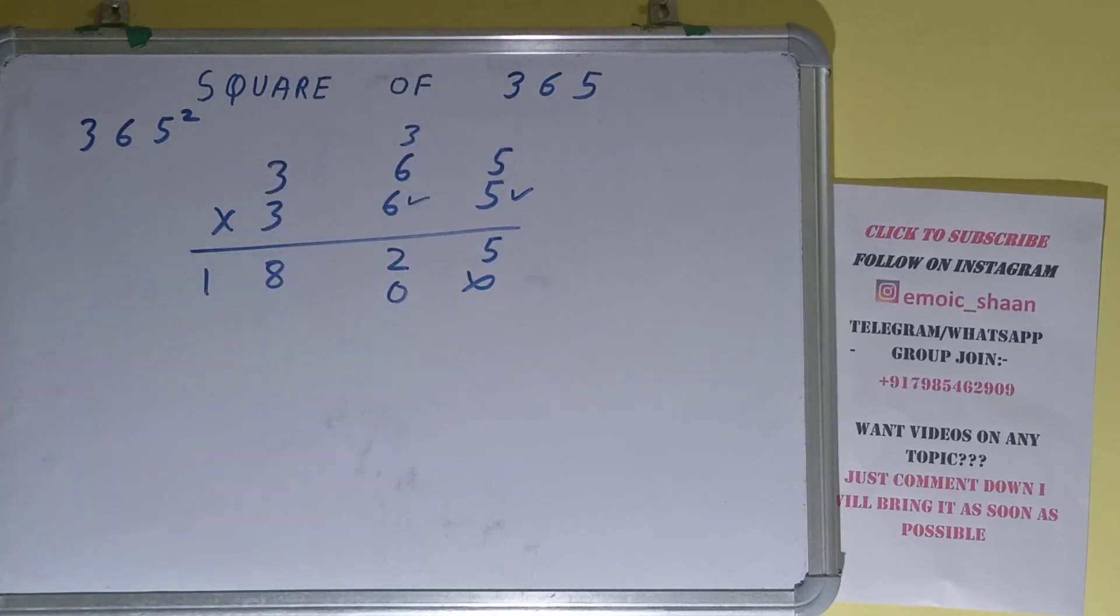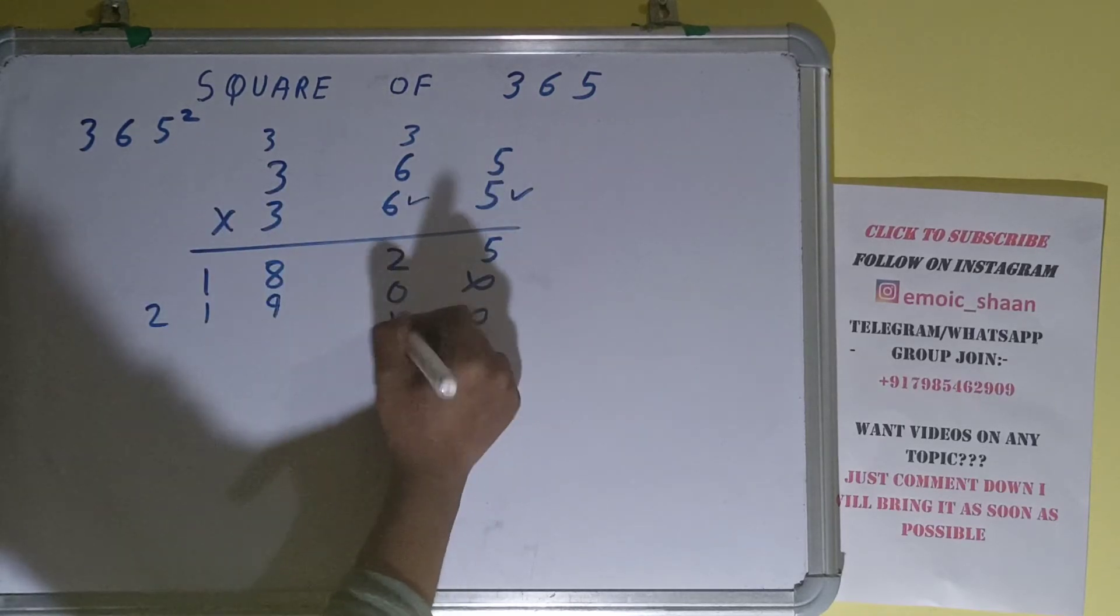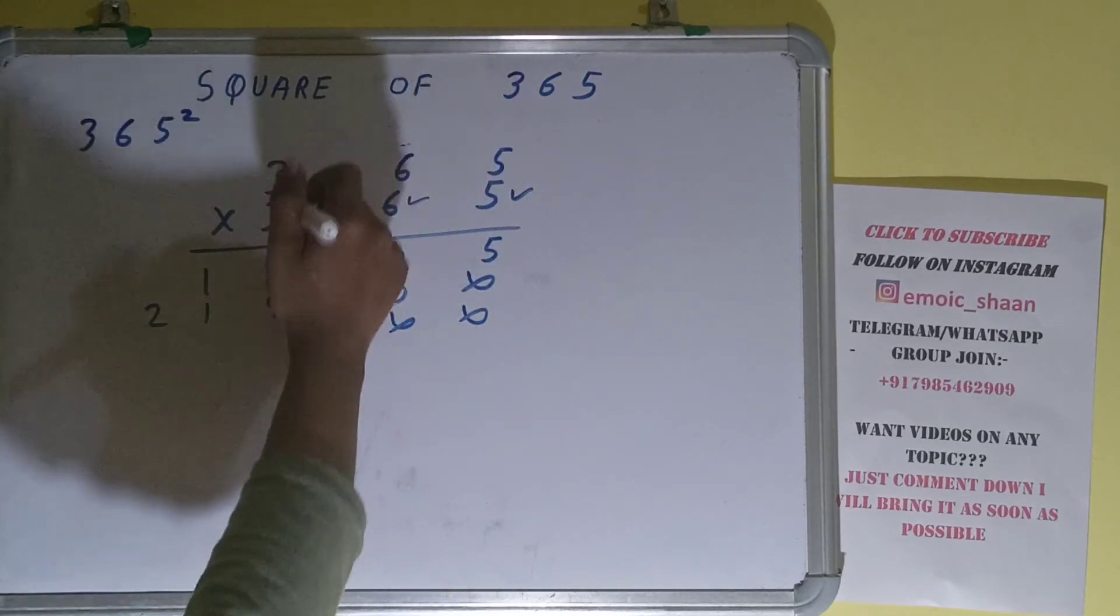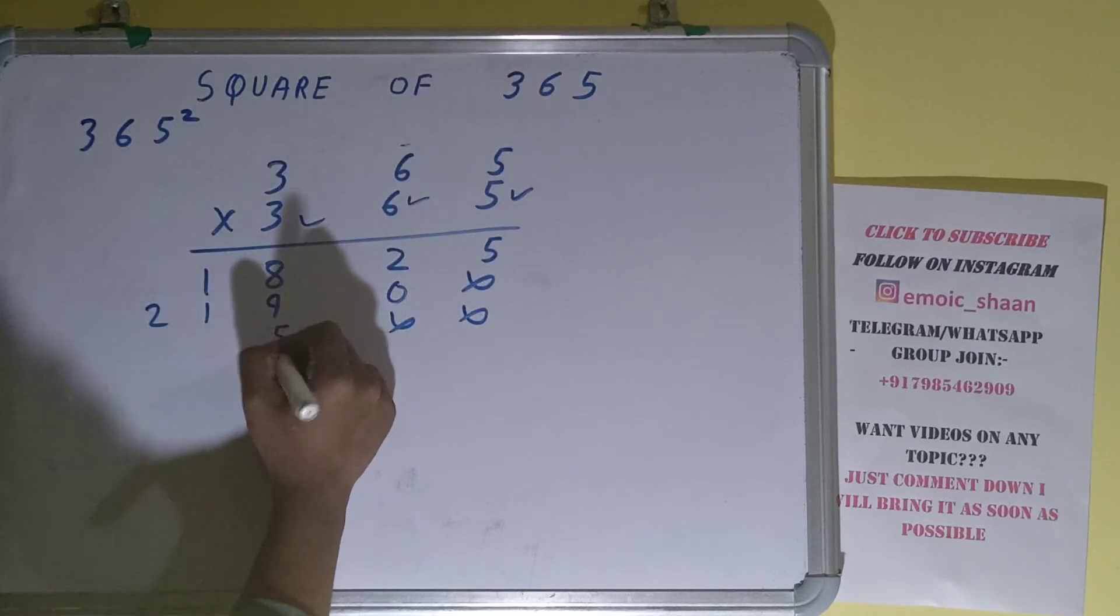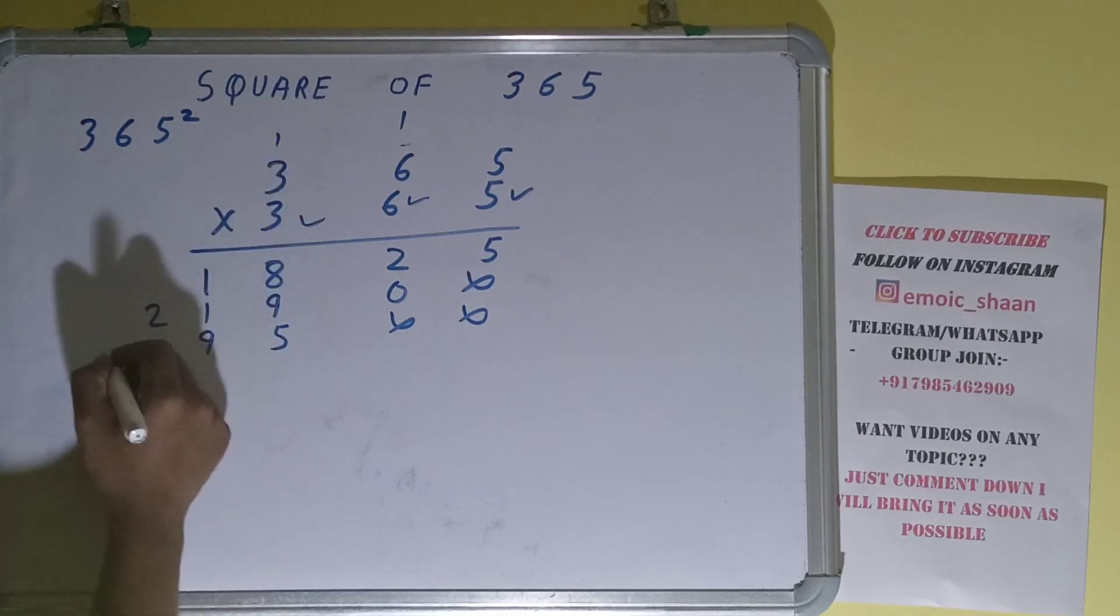6 times 6 is 36 plus 3 is 39, carry 3. 6 times 3 is 18 plus 3 is 21. 5 times 3 is 15, carry 1. 6 times 3 is 18 plus 1 is 19, carry 1. This is 9 plus 1 is 10.